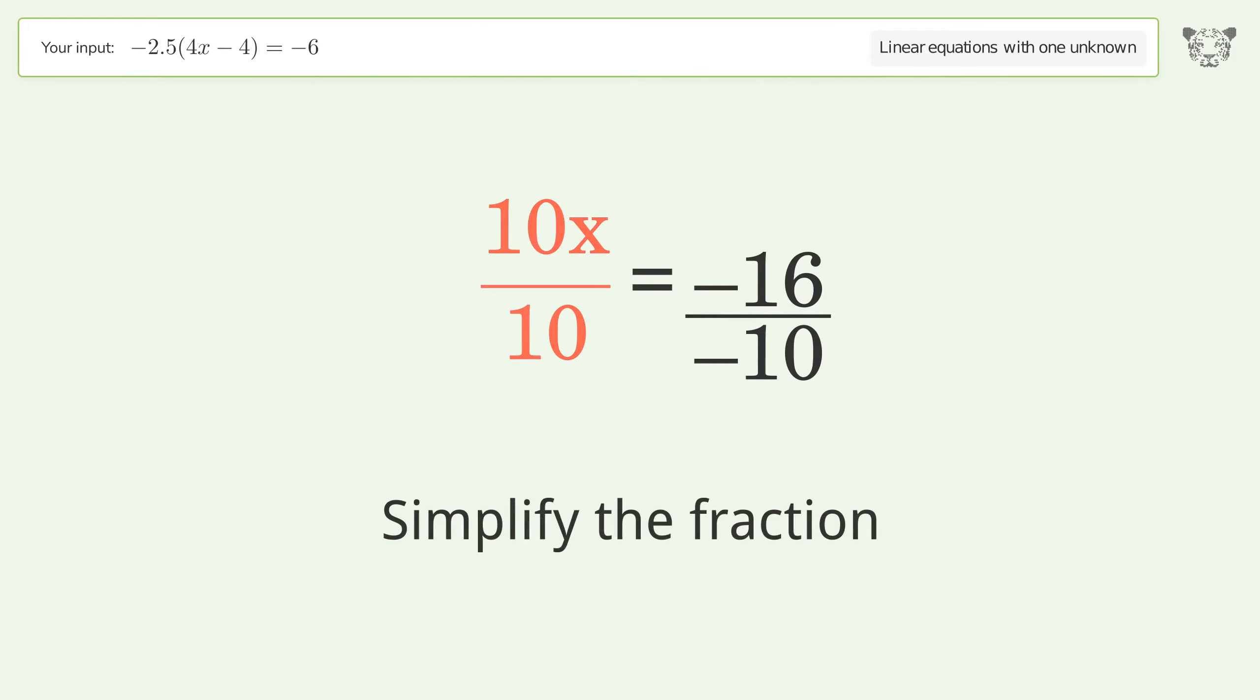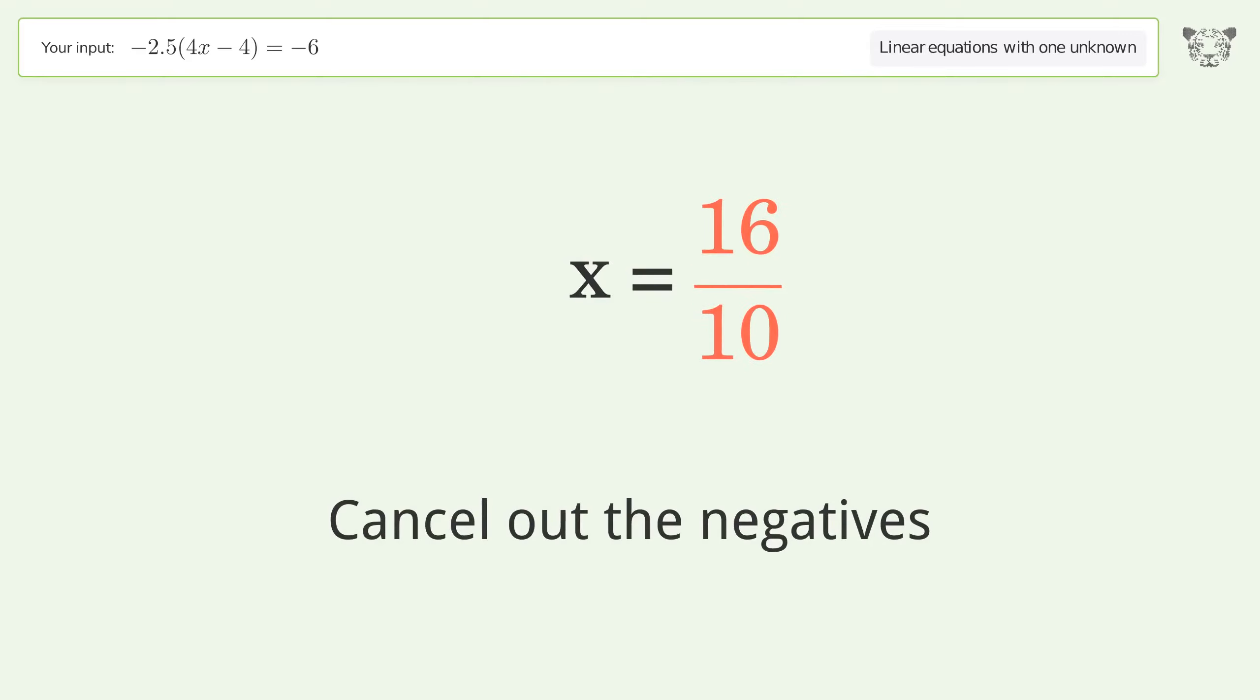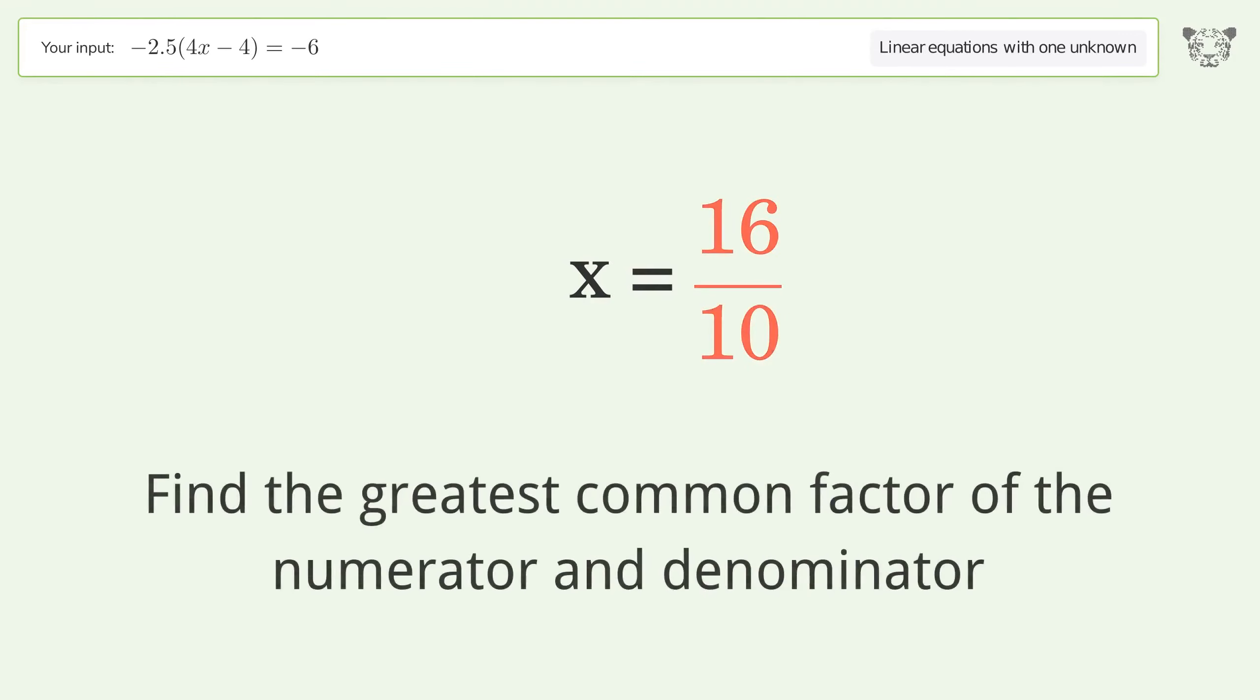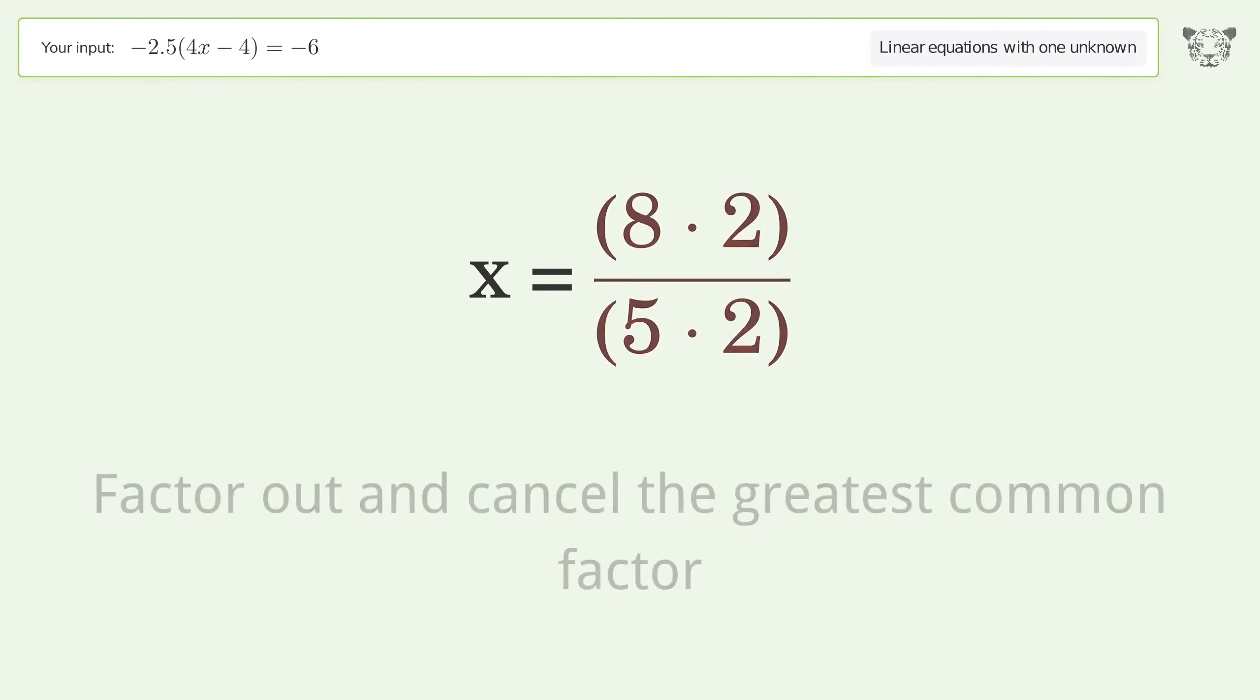Simplify the fraction. Cancel out the negatives. Find the greatest common factor of the numerator and denominator. Factor out and cancel the greatest common factor.